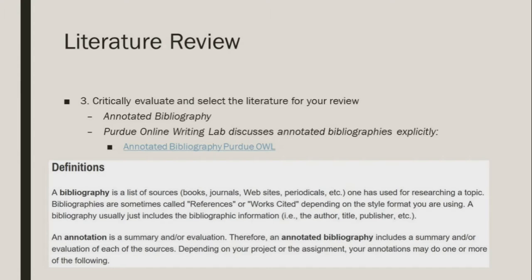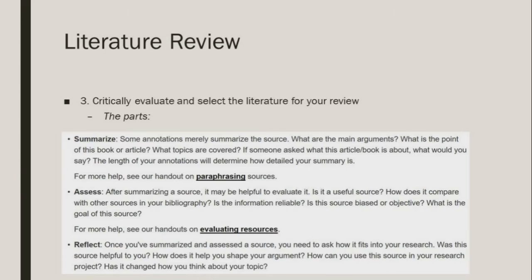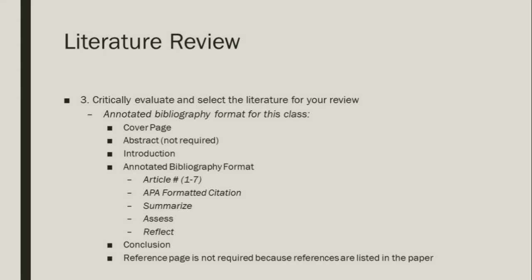One of the best ways to critically evaluate your literature is through an annotated bibliography format. The annotated bibliography format is made up of three sections: summarize the journal article, assess the value of the journal article, and reflect on how the journal article contributes to your project. In this course, for the annotated bibliography paper, your paper must be in APA format. You must have a title page, an introduction to orient your reader, label each article as number one, number two, and so forth, with references listed in APA format, and then the subheadings Summary, Assessment, and Reflection. Please see my example on Blackboard and visit Purdue Online Writing Lab for more information. The link is in the syllabus and in Blackboard.